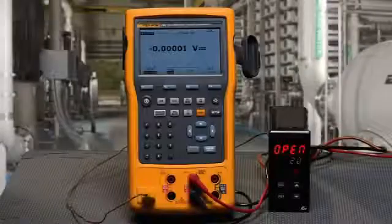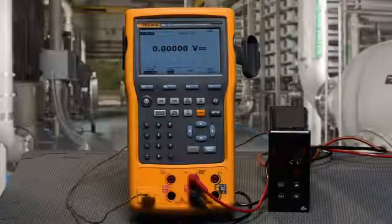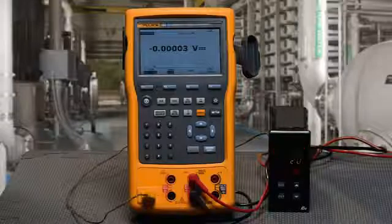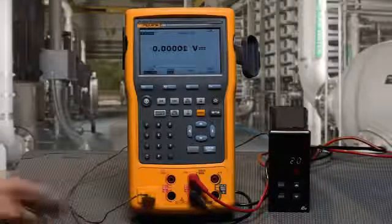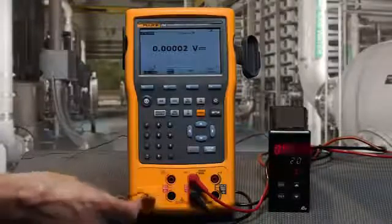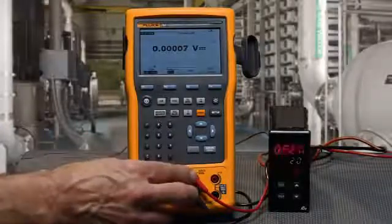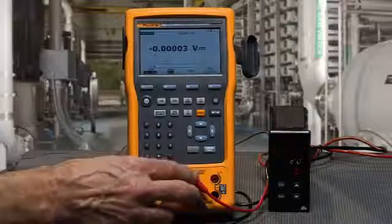In this test, we're going to use the Fluke 754 documenting calibrator to document and test the performance of a temperature switch. We will be simulating a thermocouple to its input while measuring for the contacts to change state on its output with continuity measurement.